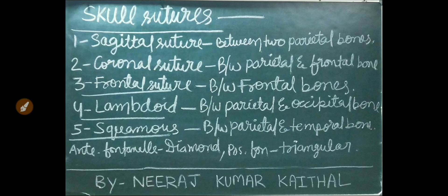Skull sutures: there are total 5 types of sutures present. First, sagittal suture between two parietal bones. Coronal suture between parietal and frontal bone. Frontal suture between frontal bones. Lambdoid suture between parietal and occipital bone. Squamous suture between parietal and temporal bone.